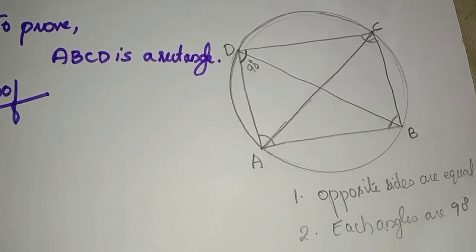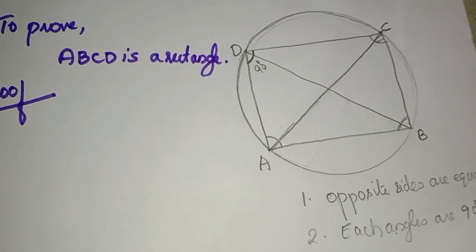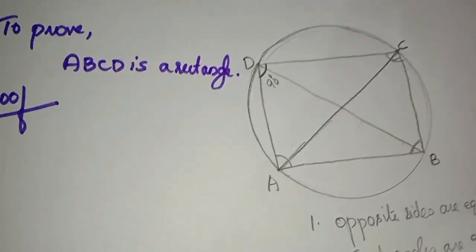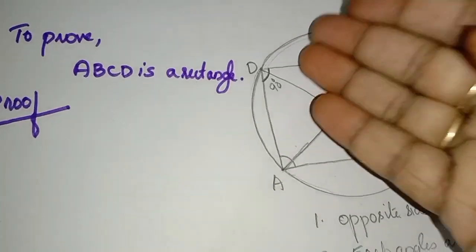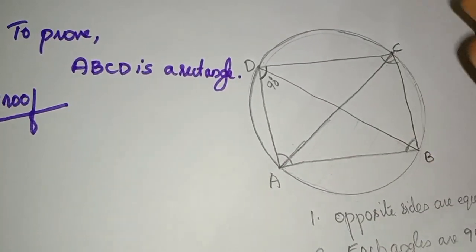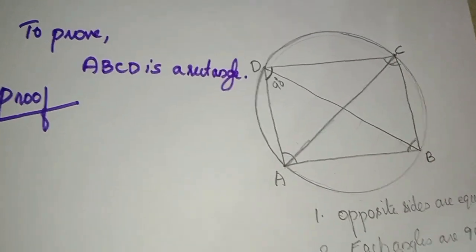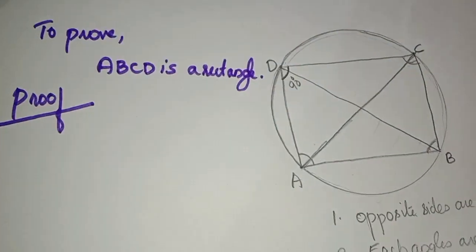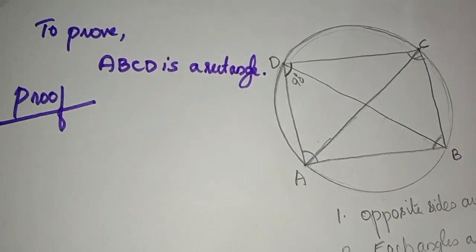When we read the angles in the semicircle, we can read the angles as 90 degrees. Then we will write all 4 angles as 90 degrees.